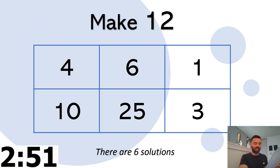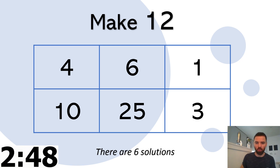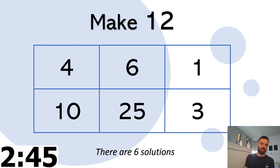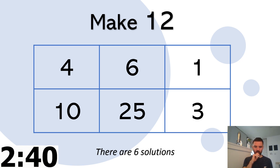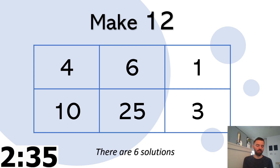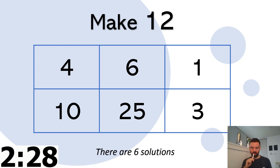How many ways? Six solutions — make 12. I've got one already — I know my three times table. Three times four is twelve.